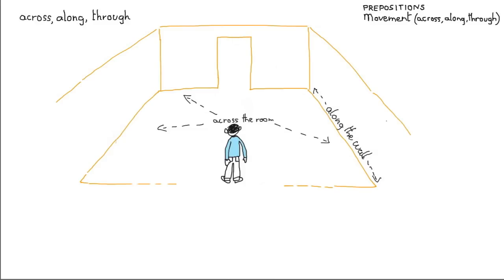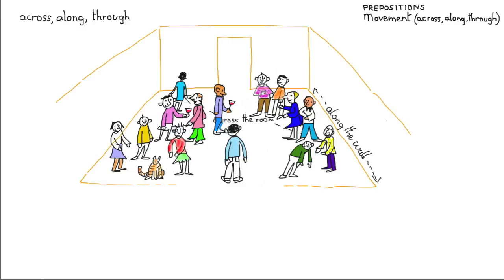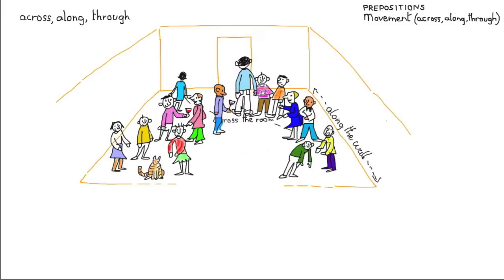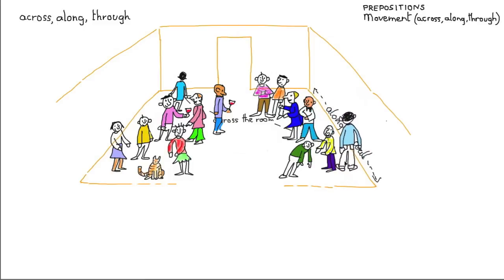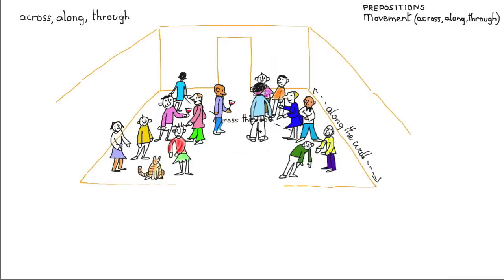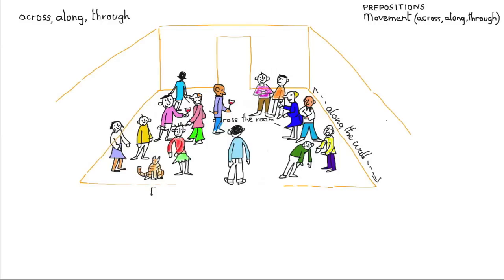Now I want to add a new element to the story, which are people. Here they are — lots of people in the room, there's a crowd in the room in fact. I'll grab my friend George, and he can walk through the crowd. He's walking through the crowd to the door, now back through the crowd to the wall, now along the wall, and back through the crowd, across the room, to where he started. I'll just write that: through the crowd.